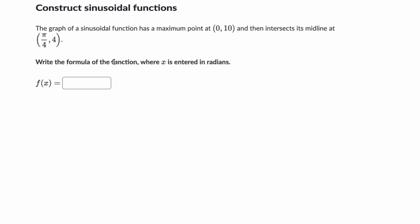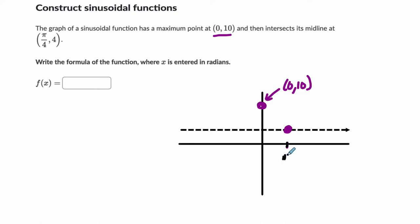They tell us that the graph of a sinusoidal function, that could be sine or cosine, has a max at 0,10. So I'm just going to plot a rough sketch. You have a max at 0,10 - that's up here. And then we're told we intersect the midline at pi over 4, 4. So at a height of 4, that's our midline. We intersect it at pi over 4, 4, so I'm marking that here. This would be pi over 4 on the x-axis, this is the height of 10, this is y equals 4, and this point is pi over 4, 4.